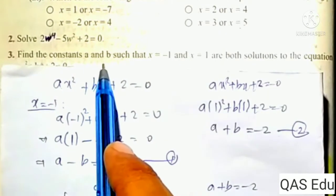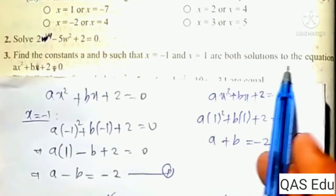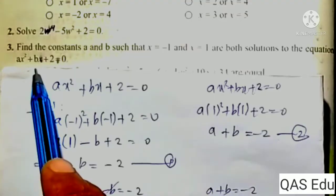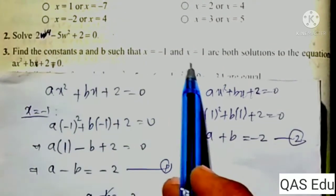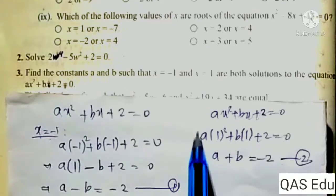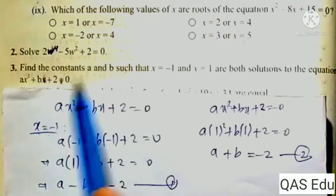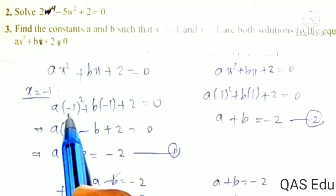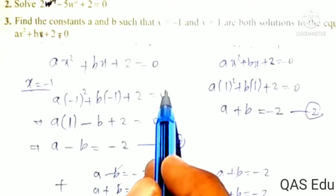Question number 3: Define the constants a and b such that x equals minus 1 and x equals 1 are both solutions to the equation ax squared plus bx plus 2 equals 0. Since both x equals minus 1 and x equals 1 satisfy the equation, we substitute each into the equation to get two equations in terms of a and b.